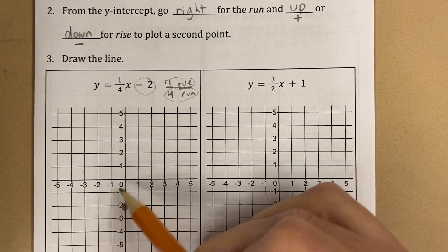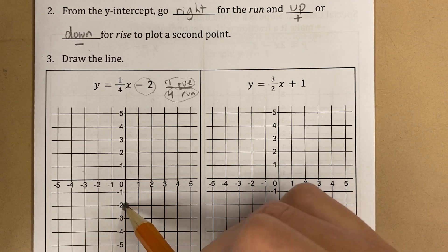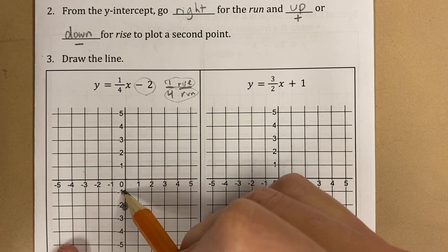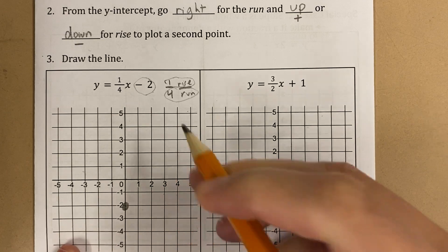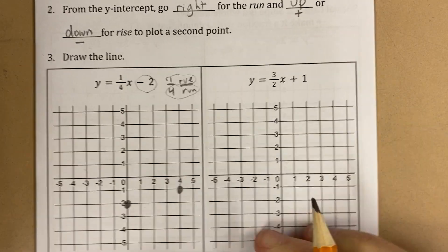So look, I'm starting at the y-intercept. Am I starting here? Nope. I'm starting at the y-intercept, and I'm rising 1, running 4. And that's my line right there.